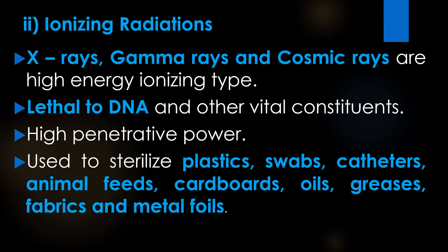The second type is ionizing radiation. X-rays, gamma rays, and cosmic rays are examples of ionizing radiations. They are high-energy ionizing types. These ionizing radiations are lethal to DNA and other vital constituents of the cell, and the penetrative power of ionizing radiations is very high.